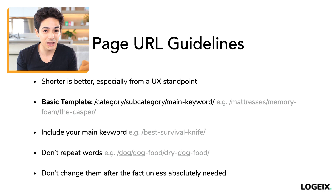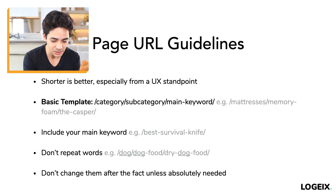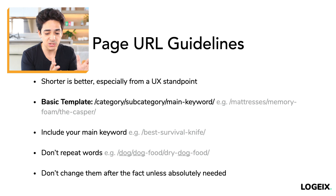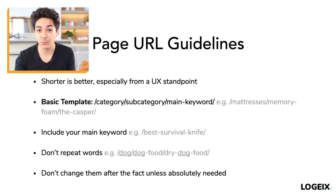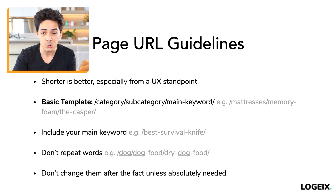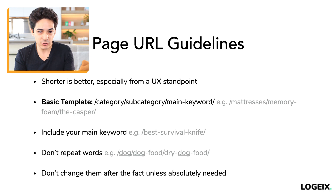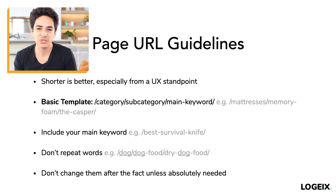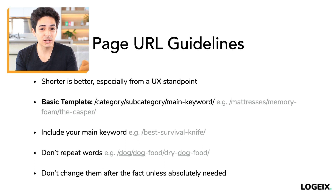One thing to be careful of is not repeating words. For example, if you have a category for dog products and a subcategory for dog foods, you could end up with slash dog, slash dog-food, slash dry-dog-food — where 'dog' is mentioned three times and 'dog food' twice. This can lead to over-optimization. Does that mean you'll get an instant penalty? No, but it's something to be cautious of, especially when you're also optimizing backlinks, anchor text, and other on-page elements.